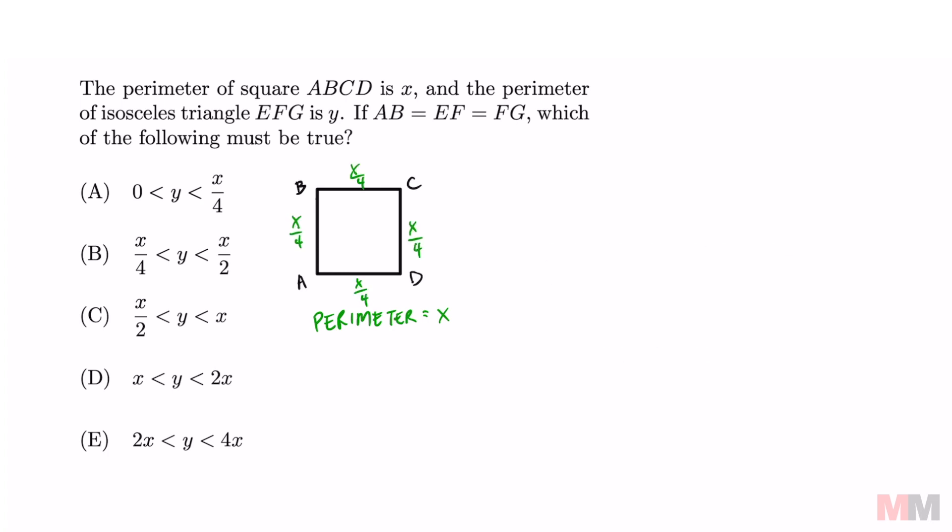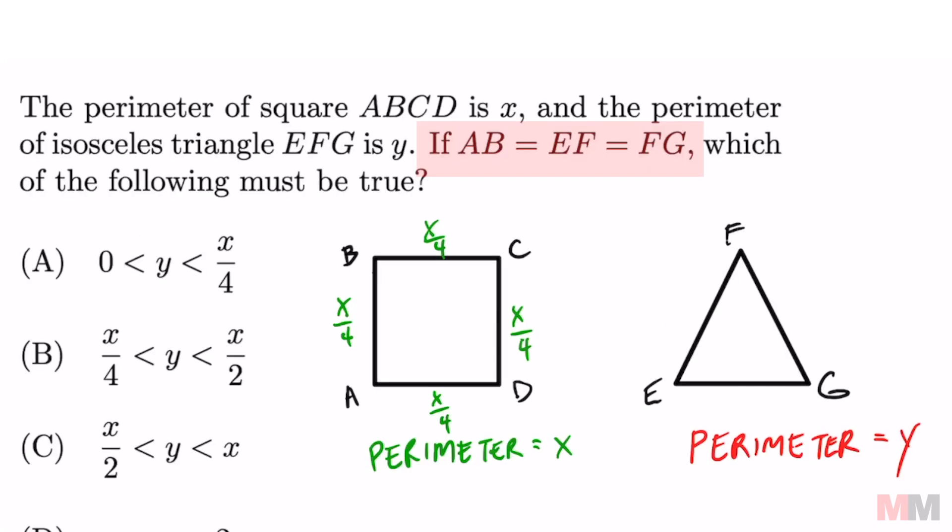We got an isosceles triangle EFG and the perimeter of that is Y. AB, EF, and FG are all going to be congruent, which means that these two expressions are going to be X over 4.